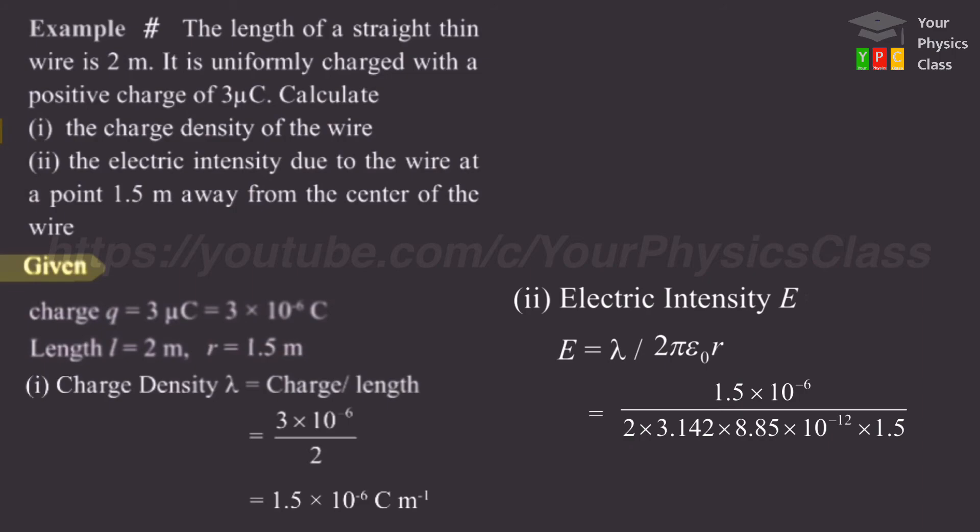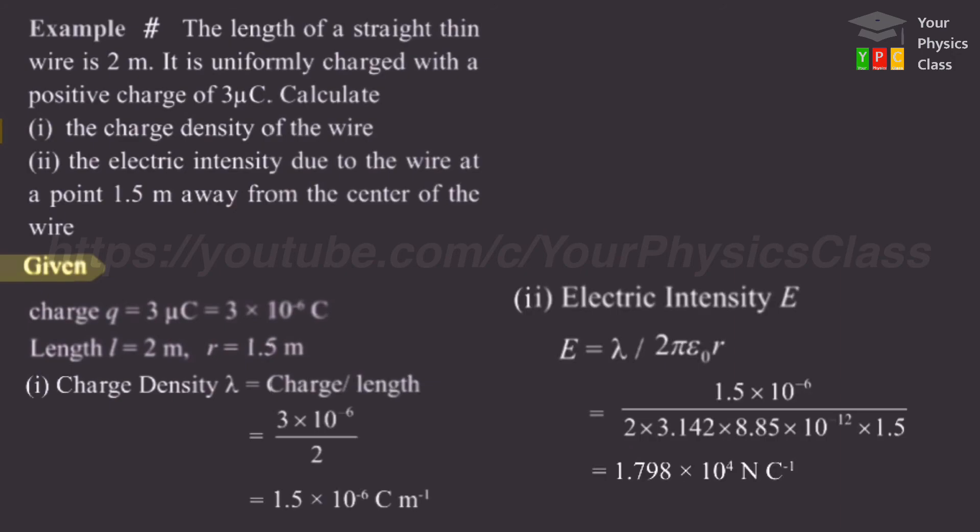Friends, yahan per 3.14 hum 10 tak ke value lete the. Lekin ab hame 3.142 hi continue karna hai. Yahan per hum sabhi value, yahan epsilon 0 ka value hum ne put kiya, aur akhir mein r ka value. On simplifying we get 1.798 into 10 raise to 4 newton per coulomb.